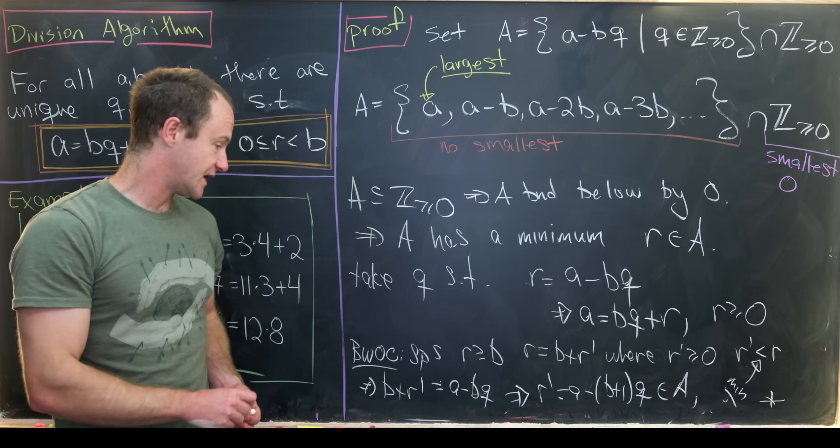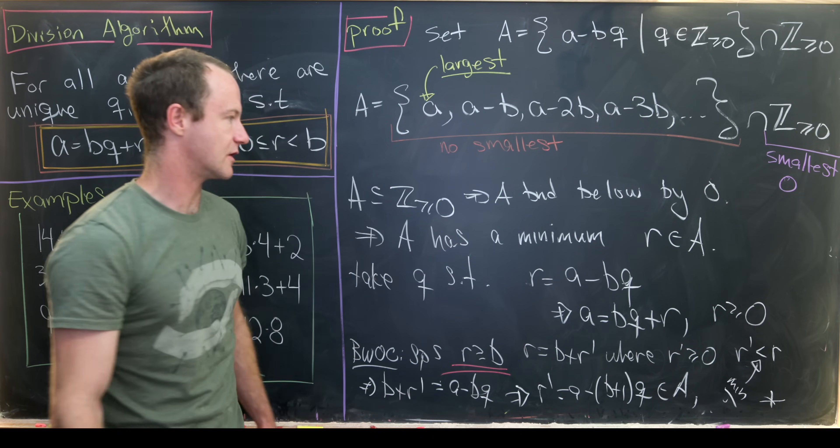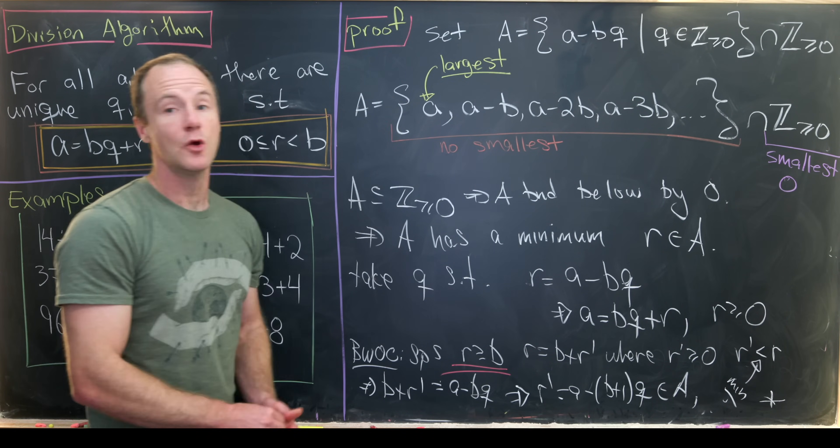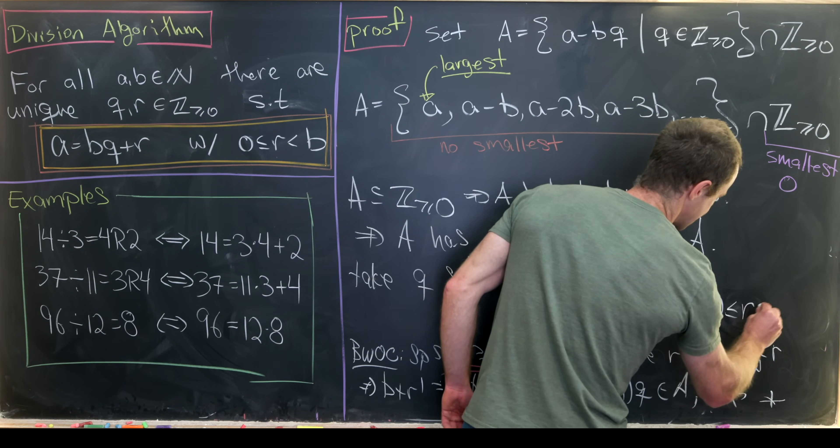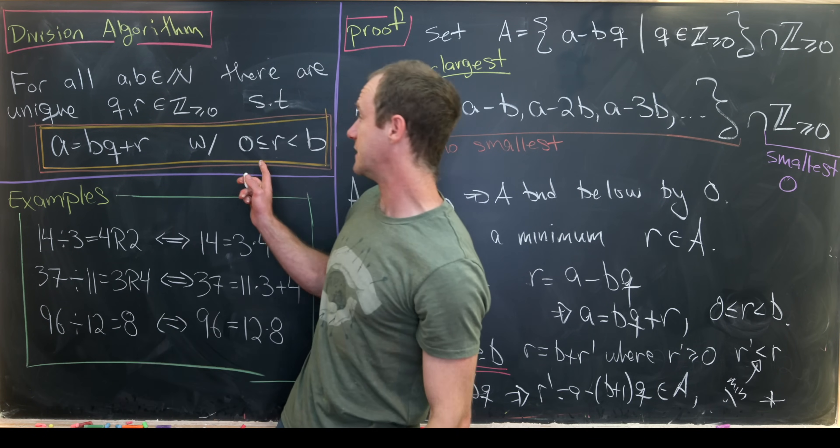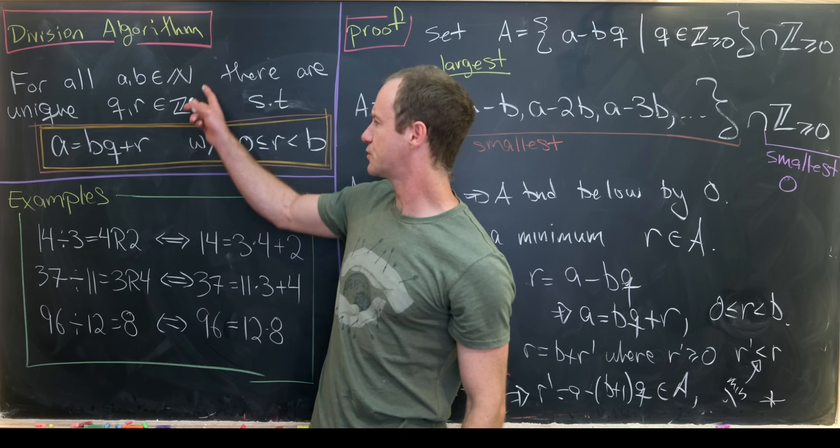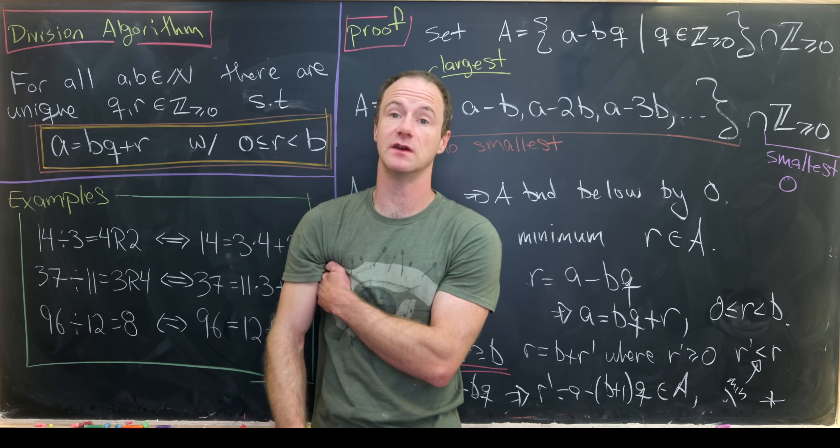So what did we contradict? Well, we contradicted the possibility of r being bigger than or equal to b. Which means we can extend this inequality here to 0 is less than or equal to r, which is less than b, as needed over here. So we just proved the existence of these numbers q and r. Now let's prove the uniqueness.